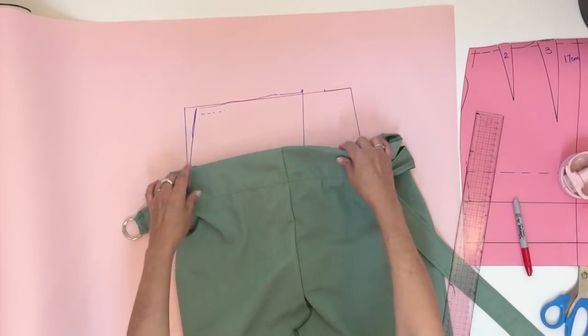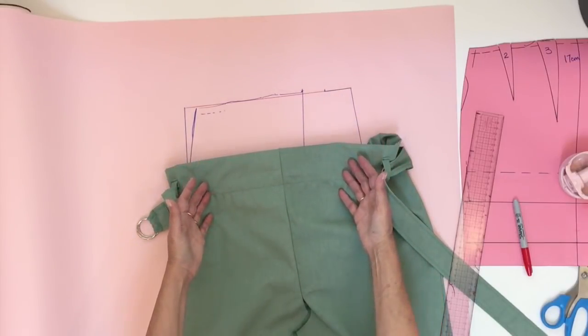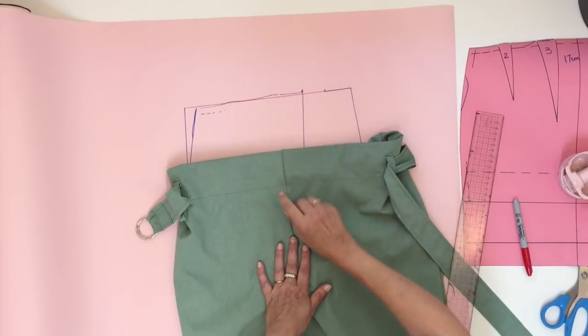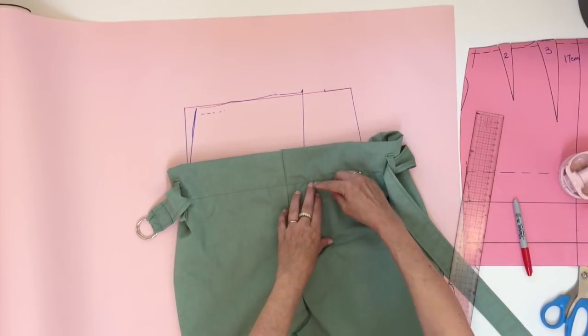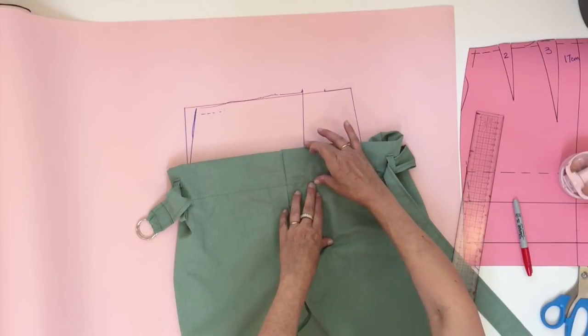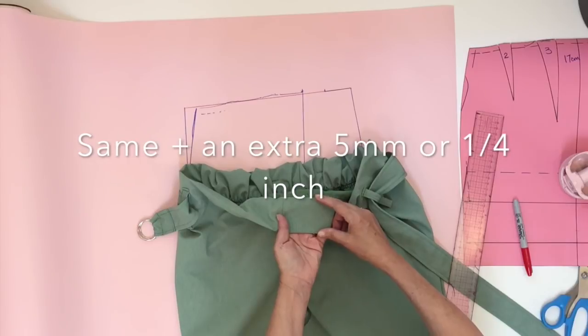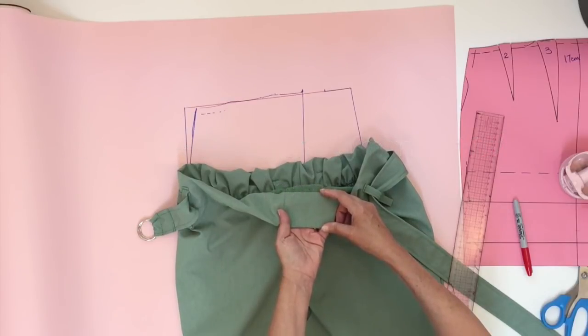Now I'm showing you my short because I want you to understand what we're doing. The last line that we just traced is the top stitch that you see on my short. So I need to add whatever I want to go up plus the same measurement and an extra five millimeters for the inside part.